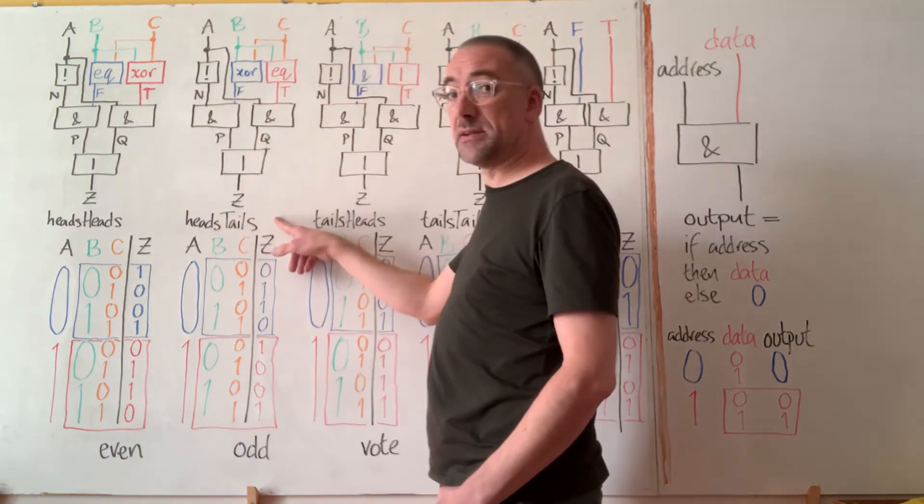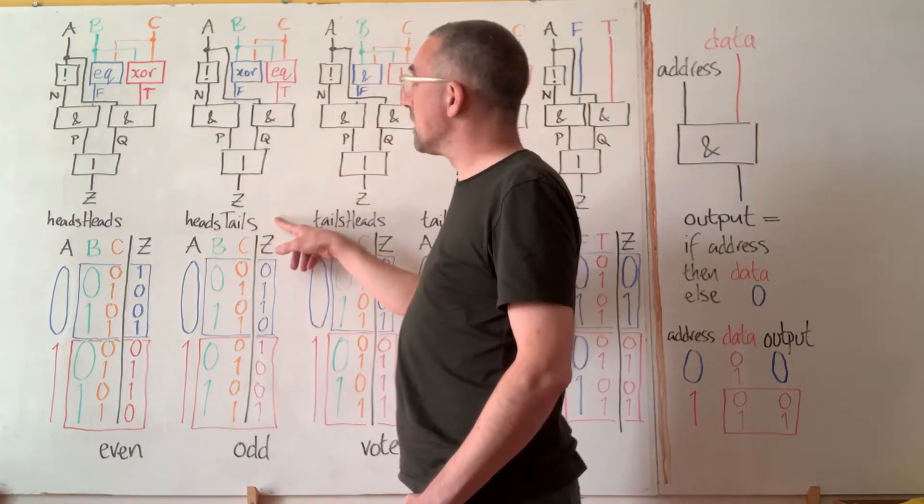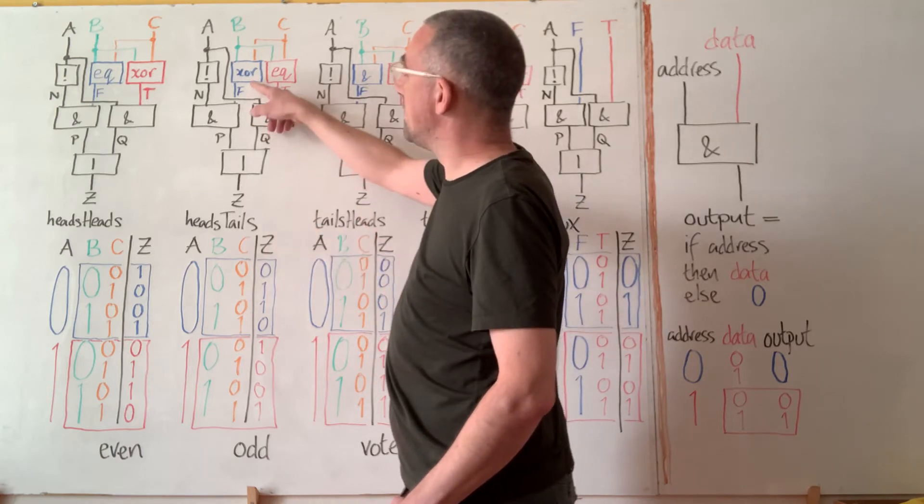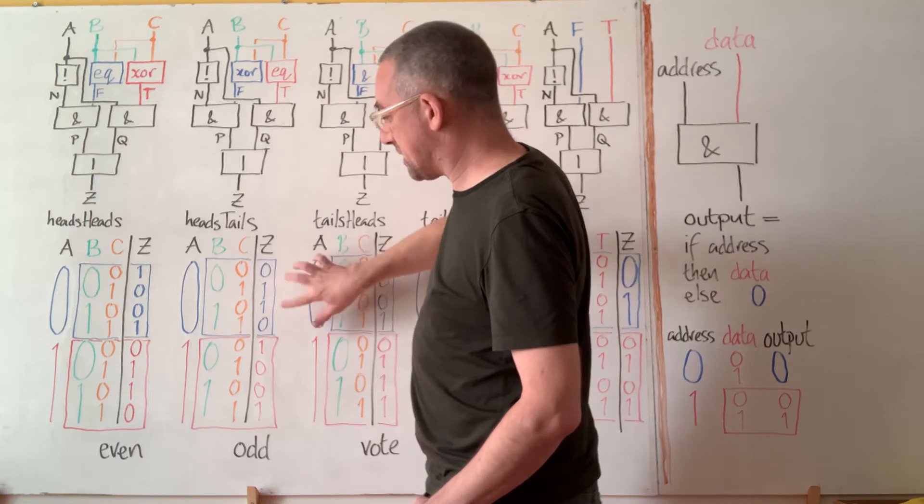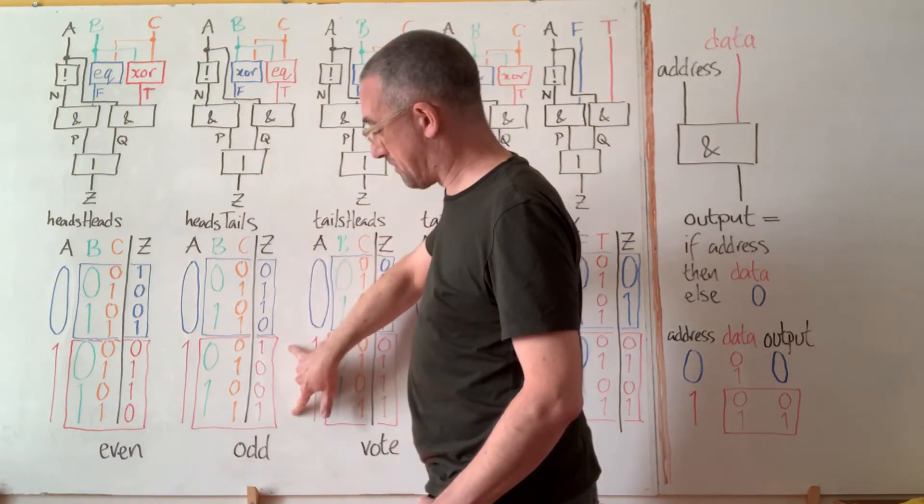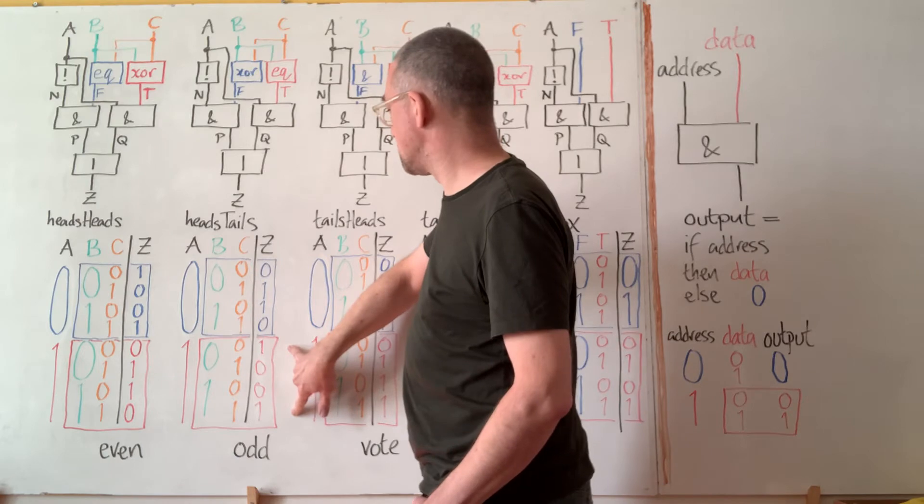For heads tails exactly the same thing is going on. Only we're choosing between an XOR and an equality test. So it's the other way up this time. The top half looks like XOR and the bottom half looks like an equality test.